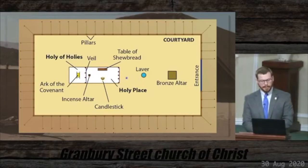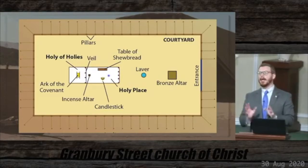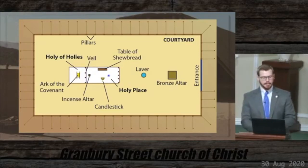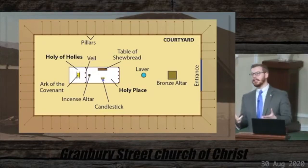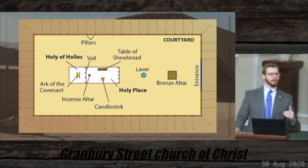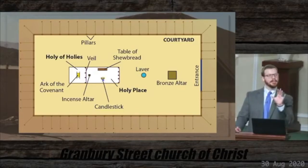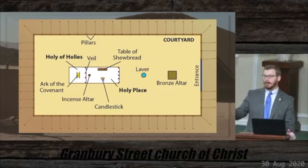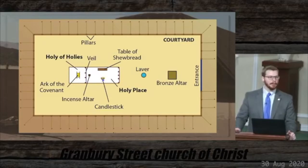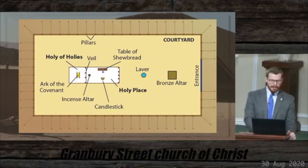Then we come into the holy place — the actual tent, the tabernacle proper. In this front room, there are three items. The first, which we talked about this morning, is the candlestick, also known as the golden lampstand, also known as the menorah. This item, which gives light and illuminates, is a great symbol for God's Word and the illumination brought specifically through Jesus. He says in John 8, 'I am the light of the world.' As followers of God, we pick up on that teaching, faithfully obey it, and repeat it so others can have this same access. The next piece across from the menorah is the table of showbread.